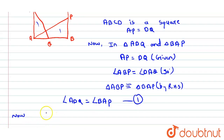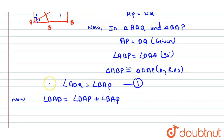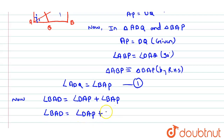Now, angle BAD equals angle DAP plus angle BAP. This complete angle is the sum of the two parts. Since angle BAP is equal to angle ADQ from our first equation, we can write: angle BAD equals angle BAP plus angle ABQ.